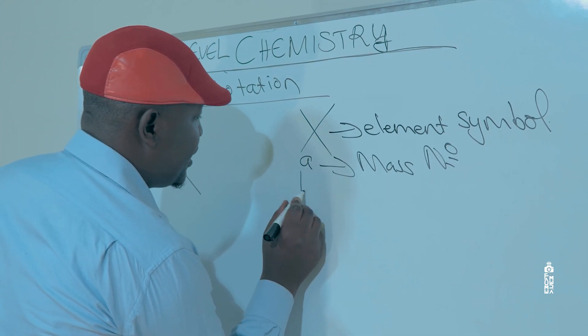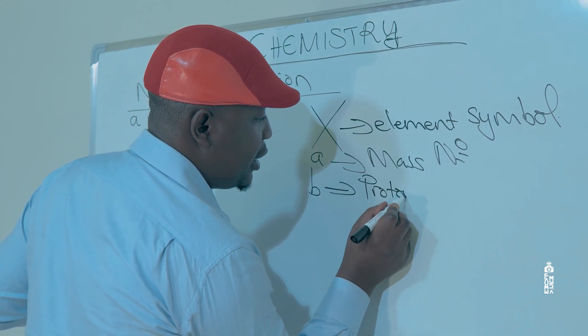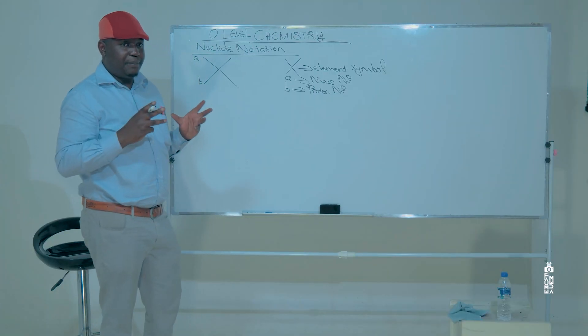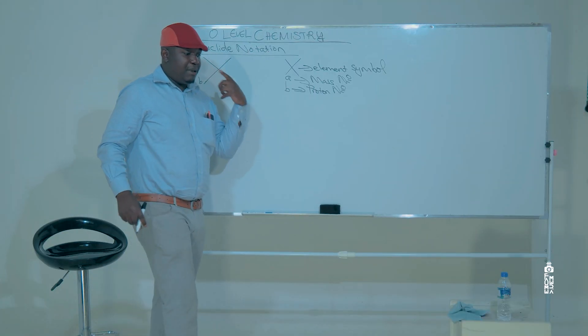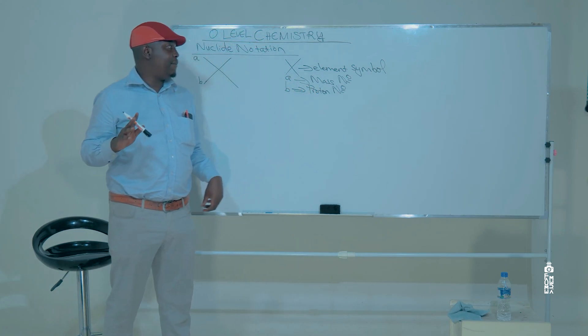And then B represents what is known as the proton number. And the proton number is sort of the fingerprint for each and particular element because no two elements have got the same proton number.